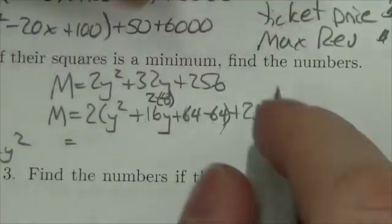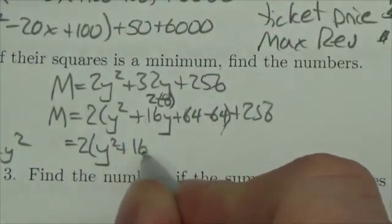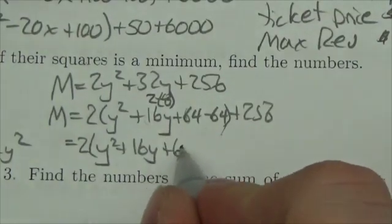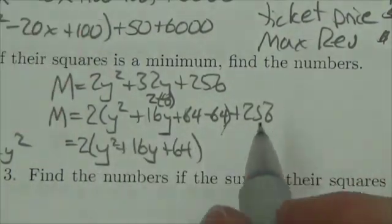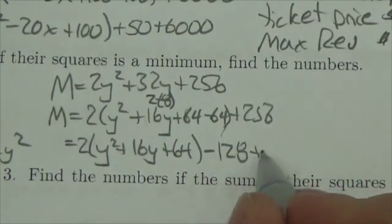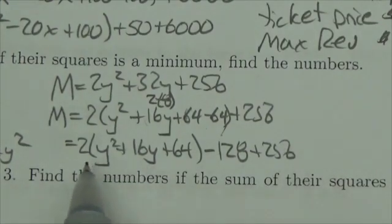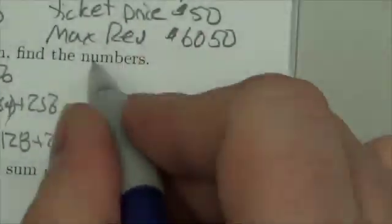Now what I'll do is I'll take that 64 out. So I will get 2 times y squared plus 16y plus 64. Take out the negative 64 by multiplying by 2. So I'm going to subtract 128 out of that. There's still the plus 256 out there. But this is now in a form that can be quite easily factored. So I'll come back over here.